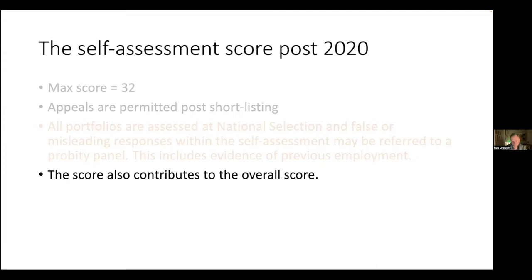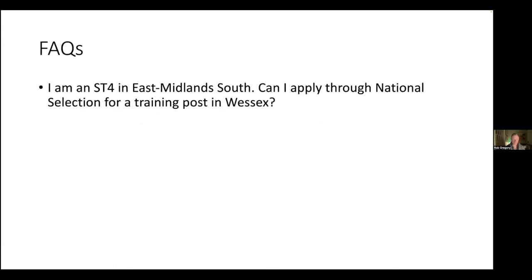The self-assessment score, which may be as high as 32, also contributes to your overall score in the selection process. Regarding frequently asked questions: if you're an ST4 and want to move programmes, you can apply through national selection — though the conventional way, if you have a good reason, is to go through the inter-deanery transfer process. We'd like to think that if a trainee has a genuine reason, often family reasons, we would support and facilitate that move. However, it's perfectly legitimate to use the selection process to move deaneries.